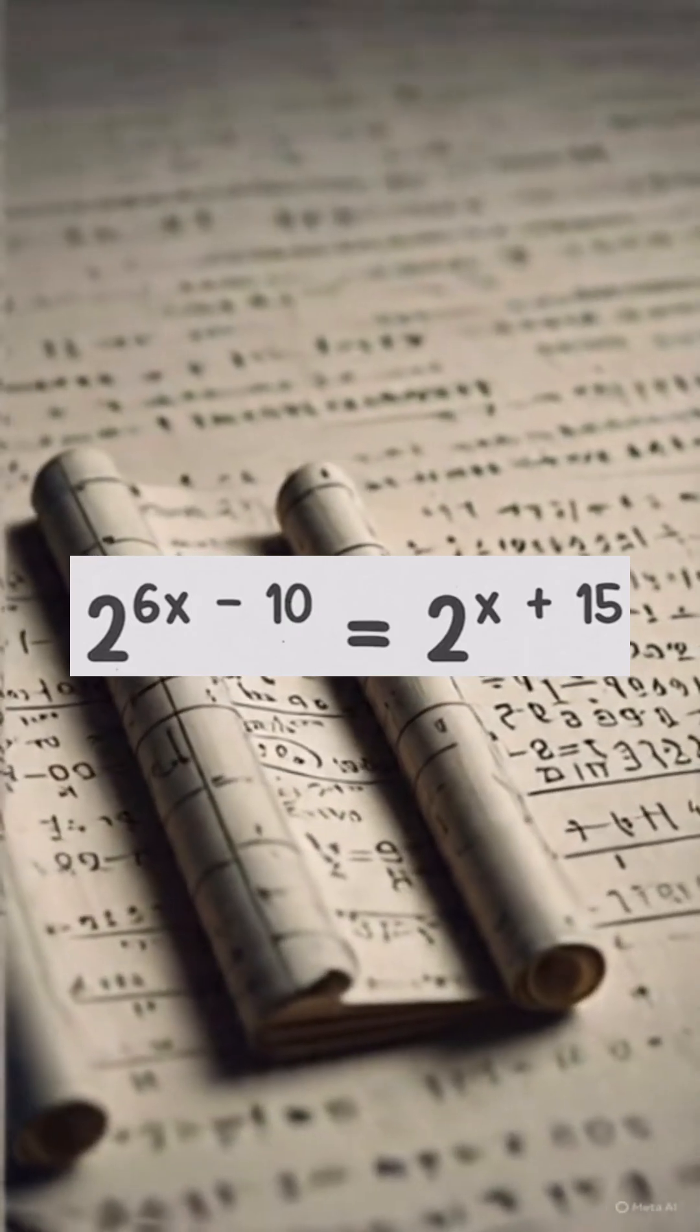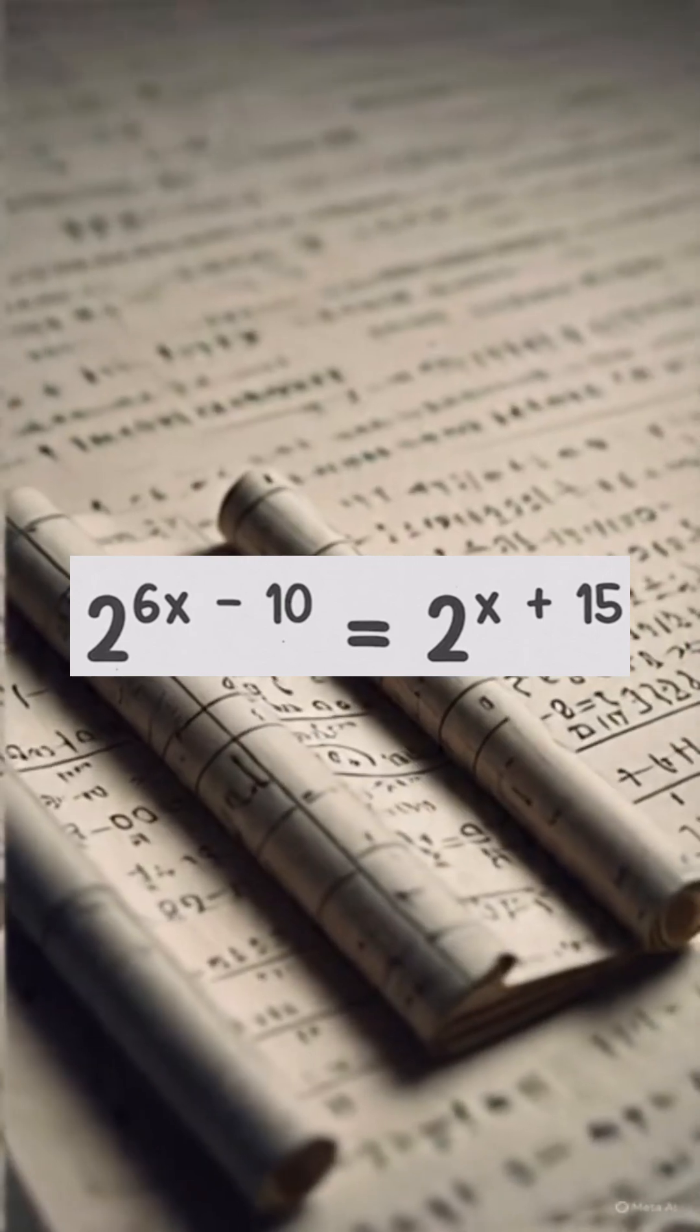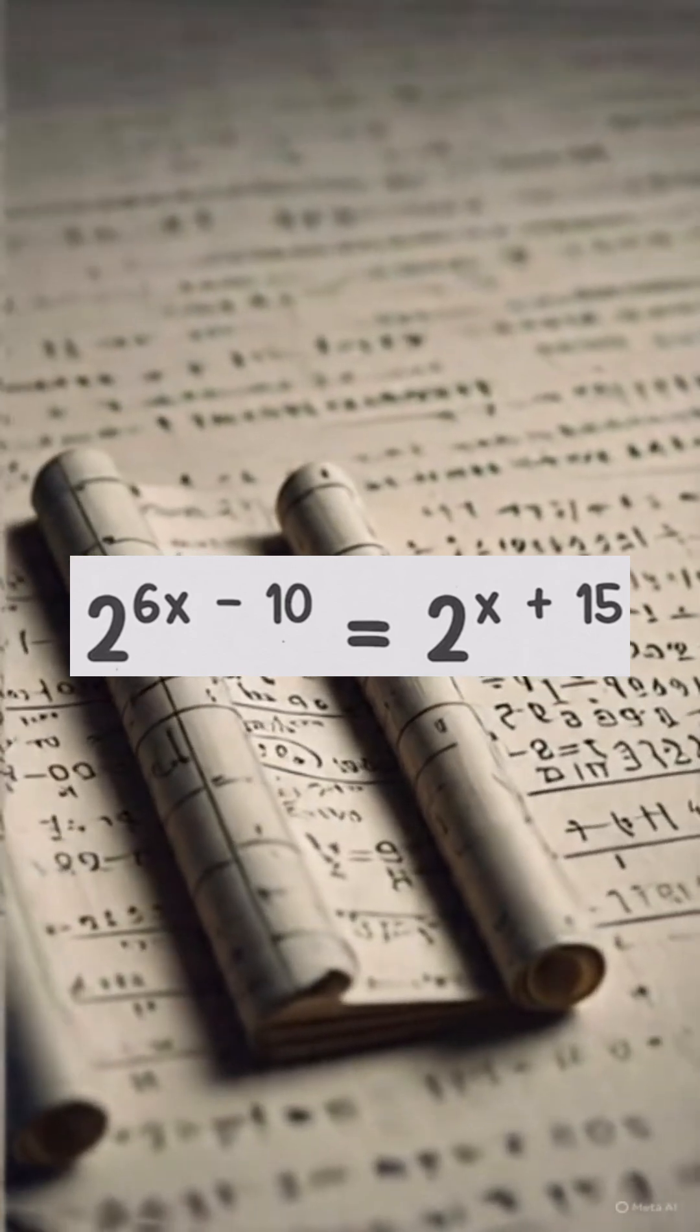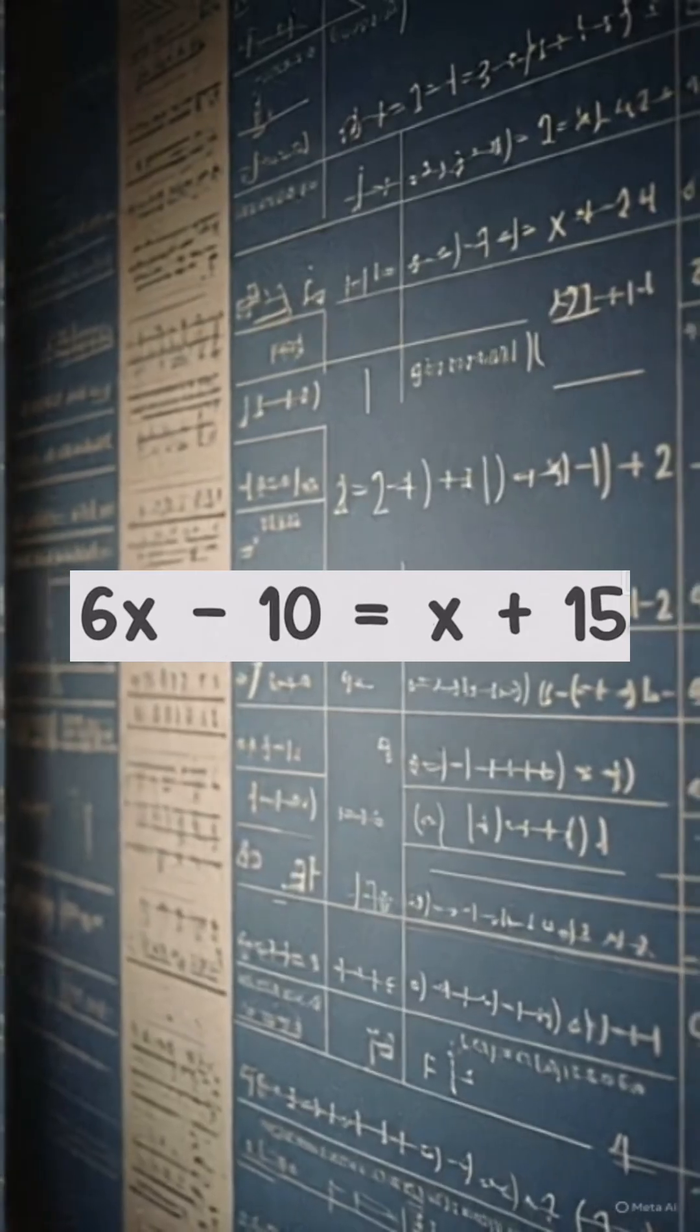Now, our equation becomes 2 to the power of 6x minus 10 equals 2 to the power of x plus 15. Since the bases are the same, we can equate the exponents, giving us 6x minus 10 equals x plus 15.